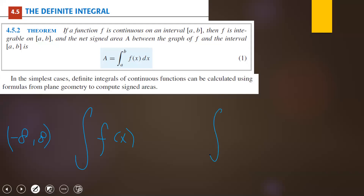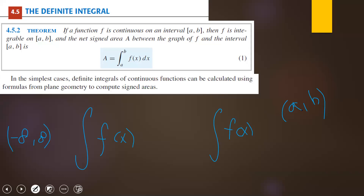Today we will talk about the definite integral — that means I will make an integration over an interval a to b. With the indefinite integral, I integrate from negative infinity to infinity. But with a definite integral, I integrate over a certain interval from a to b. So I have to write a at the bottom and b at the top of the integral sign.